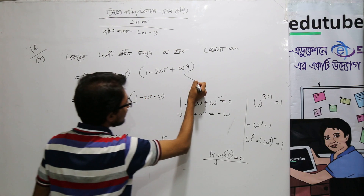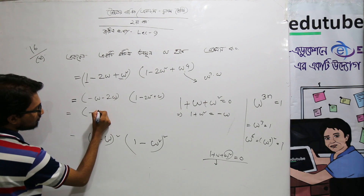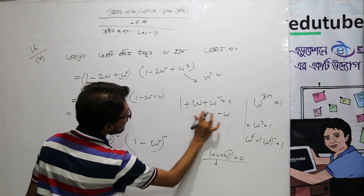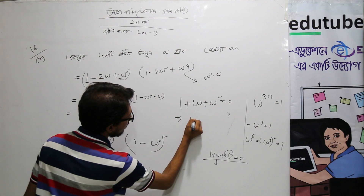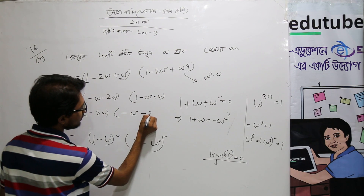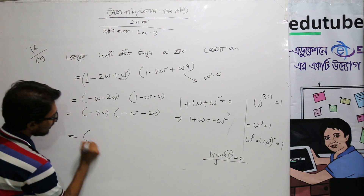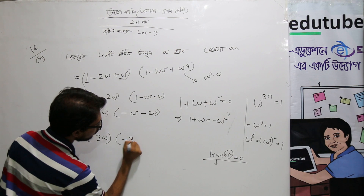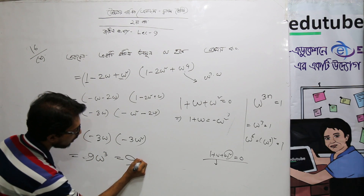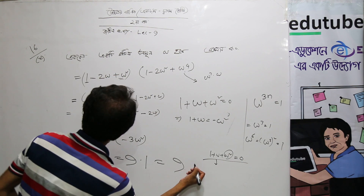We put omega to the power 4 equals omega cubed into omega equals omega. Now we put minus 3 omega and 1 plus omega equals minus omega squared. So we put minus omega squared into minus 2 omega squared, giving minus 3 omega into minus 3 omega squared. And omega cubed means 1, so we get 9.